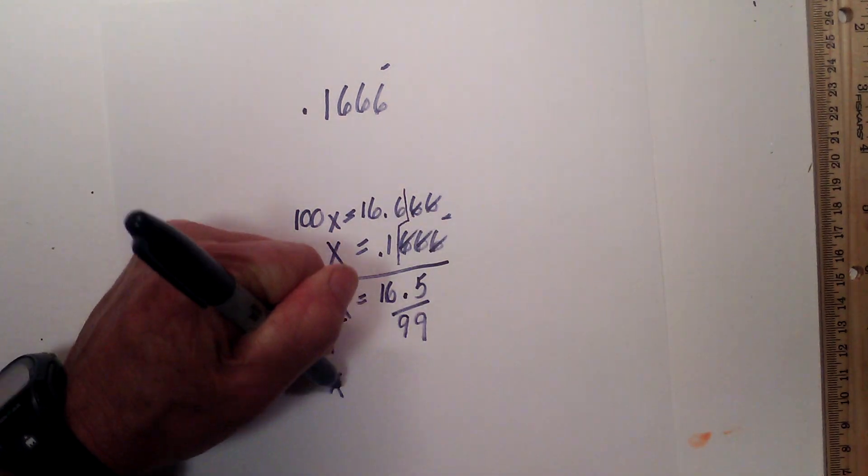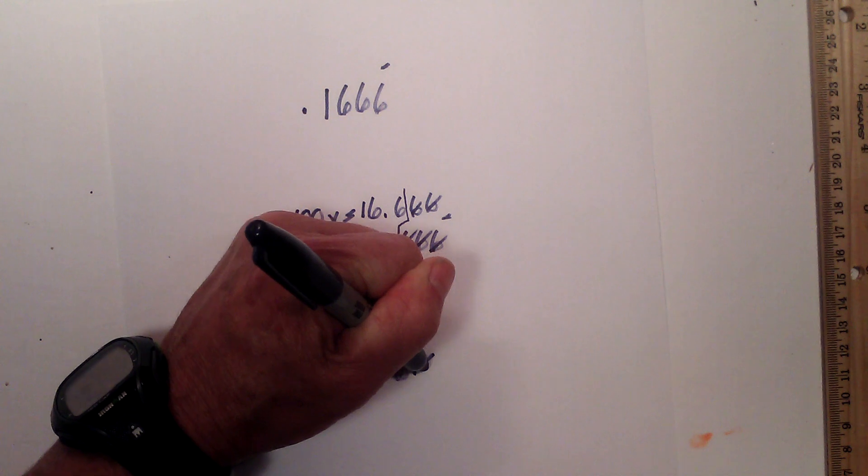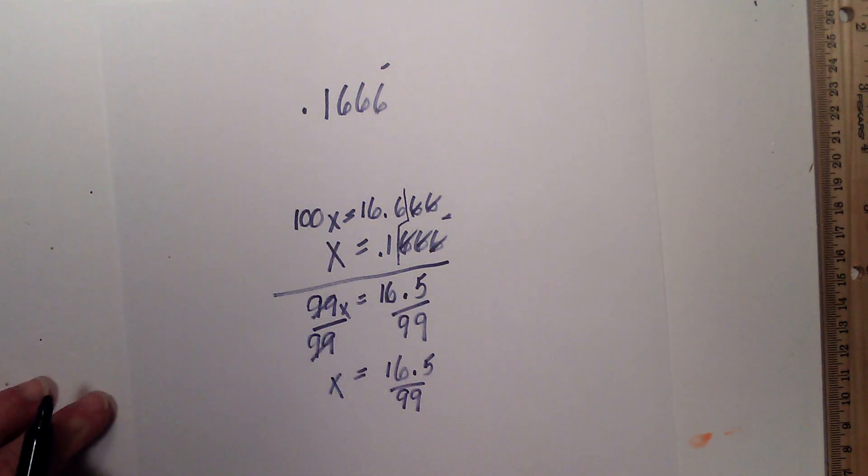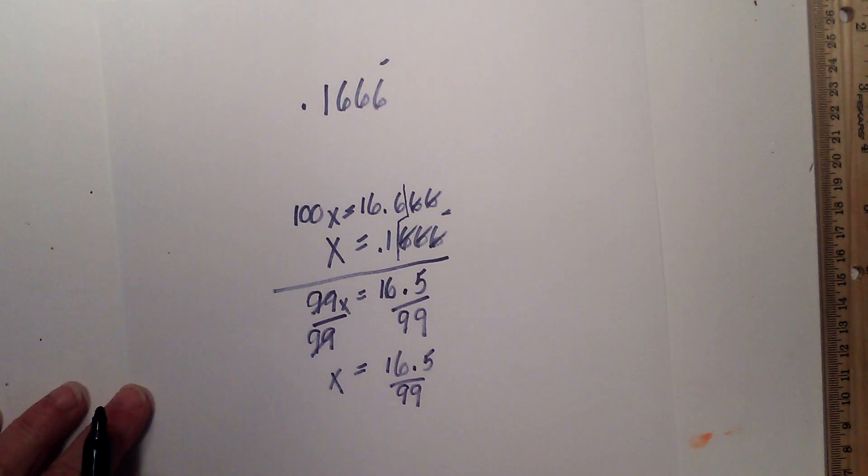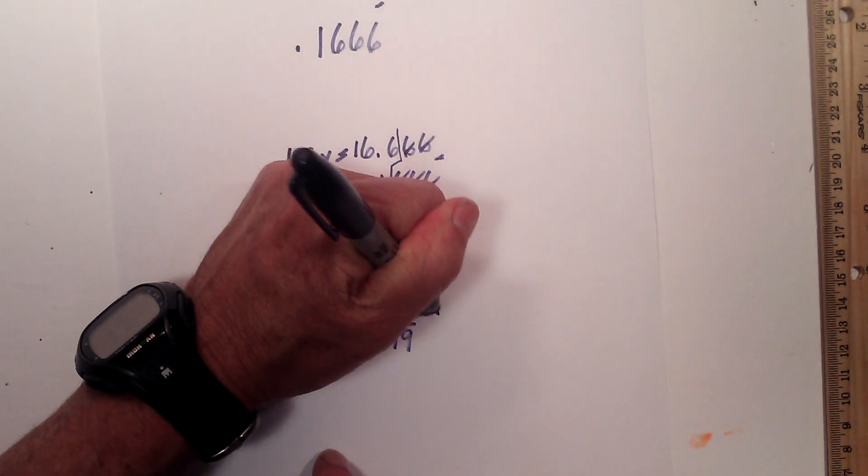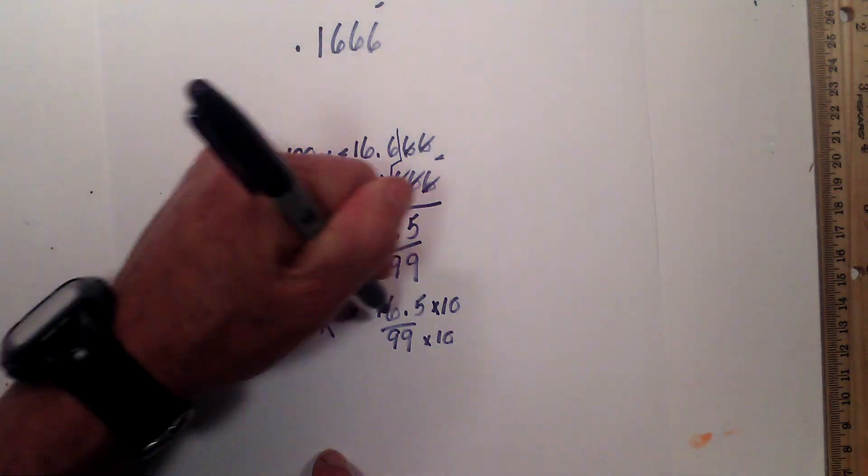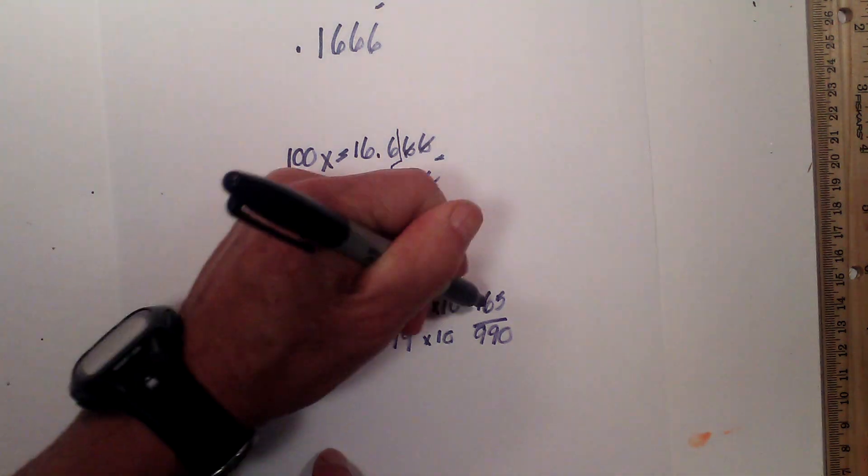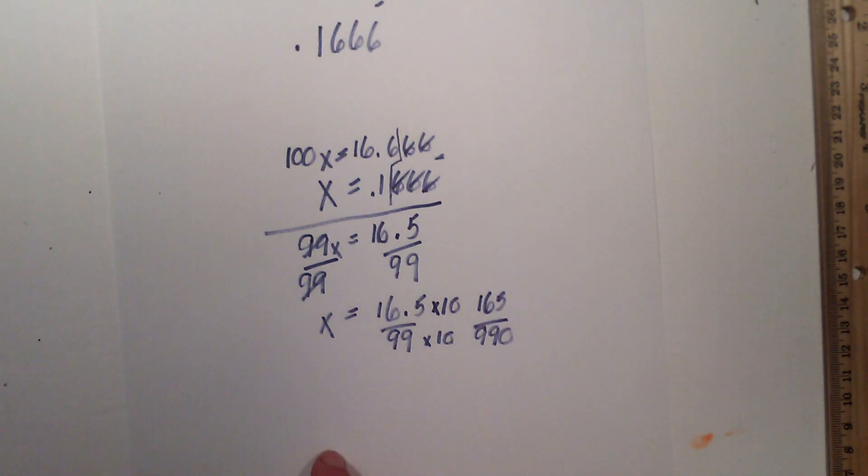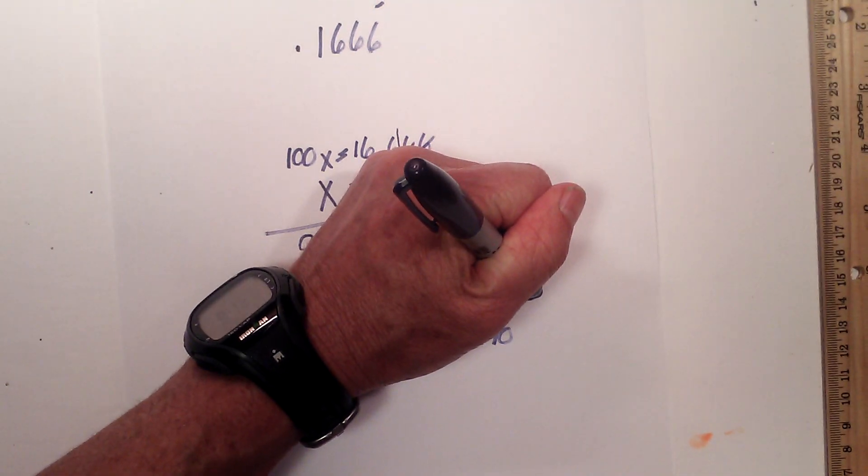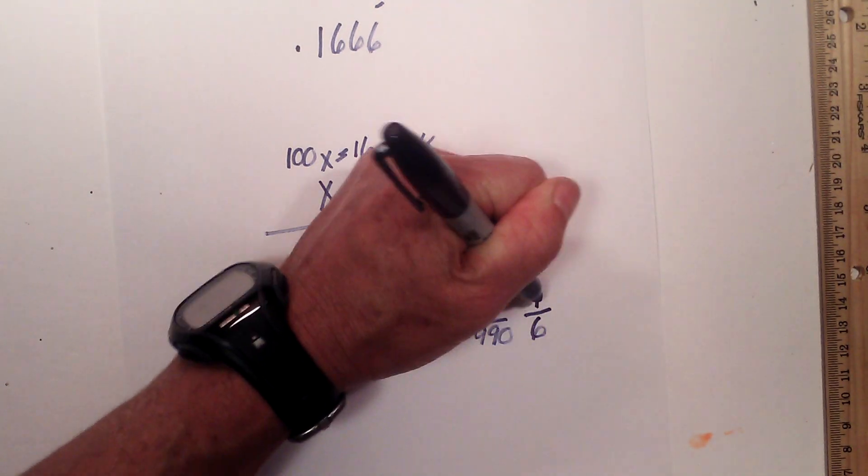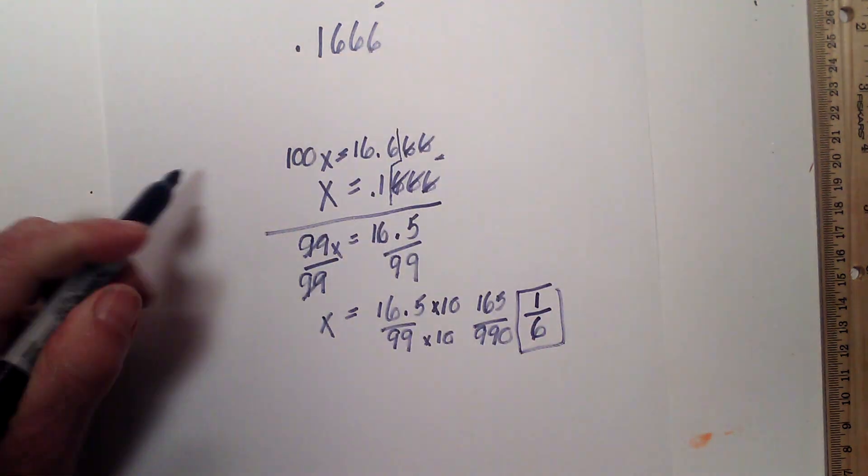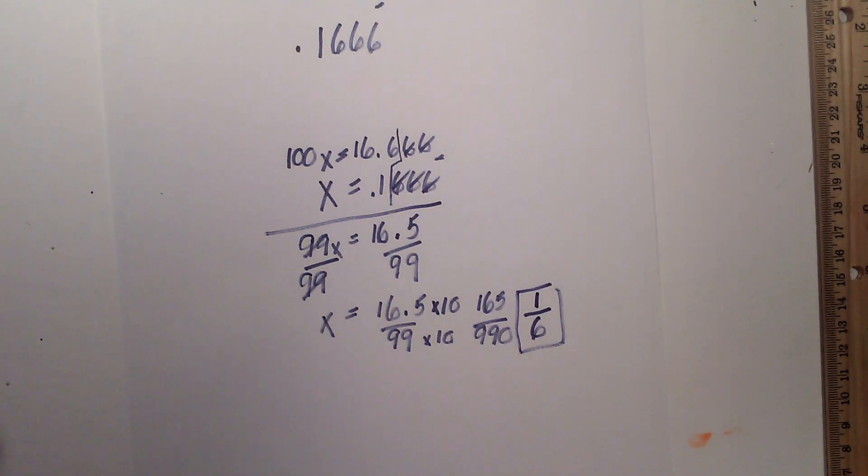These cancel. Now what do we do with this decimal in the fraction? Well, all you have to do to get rid of that is multiply it by 10, each numerator and denominator by 10. So that becomes 165 over 990. And 165 will go into 990. It will go in, it goes in 6 times. 165 into 165 is 1, 165 into 990 is 6. So 0.16666 is 1/6.